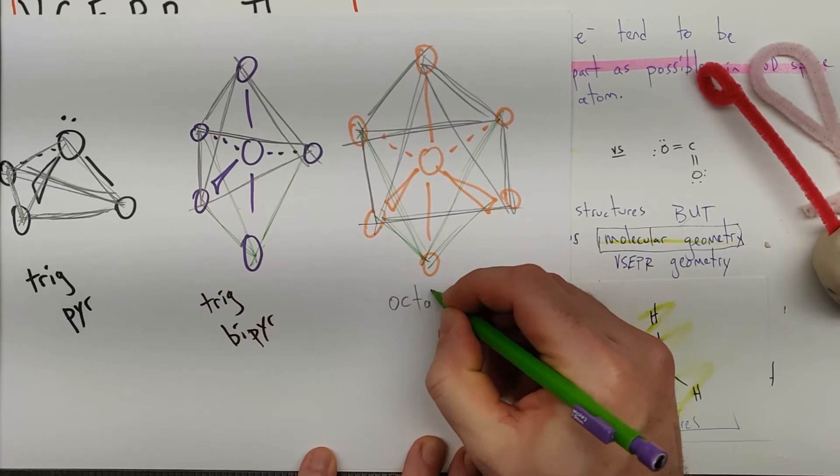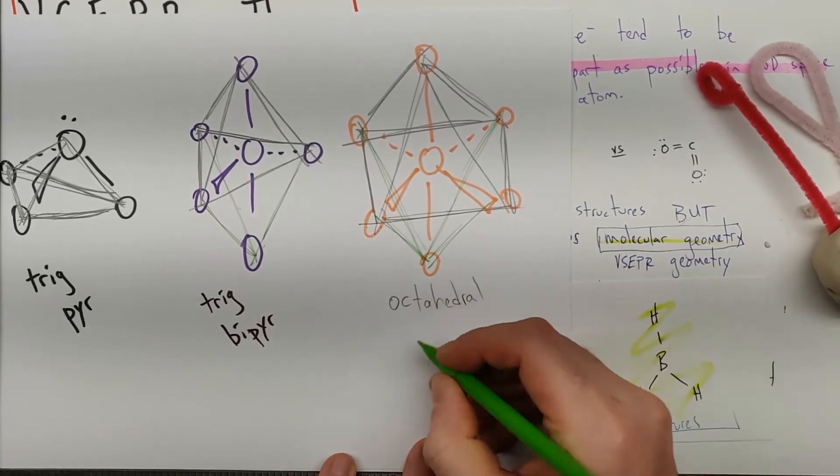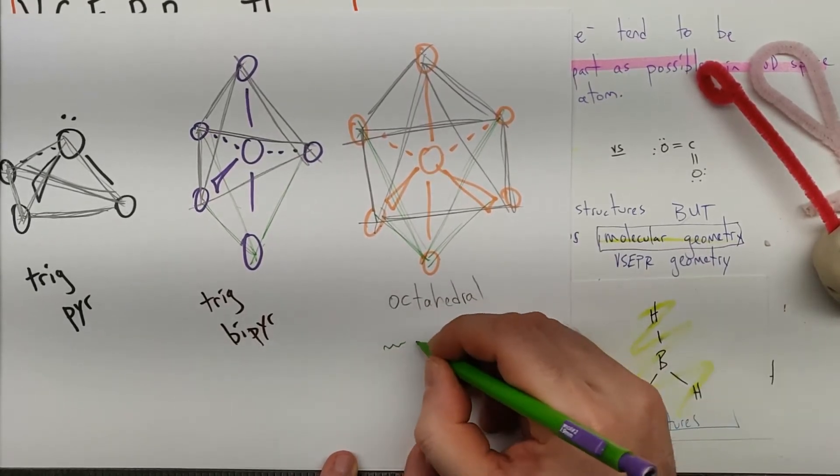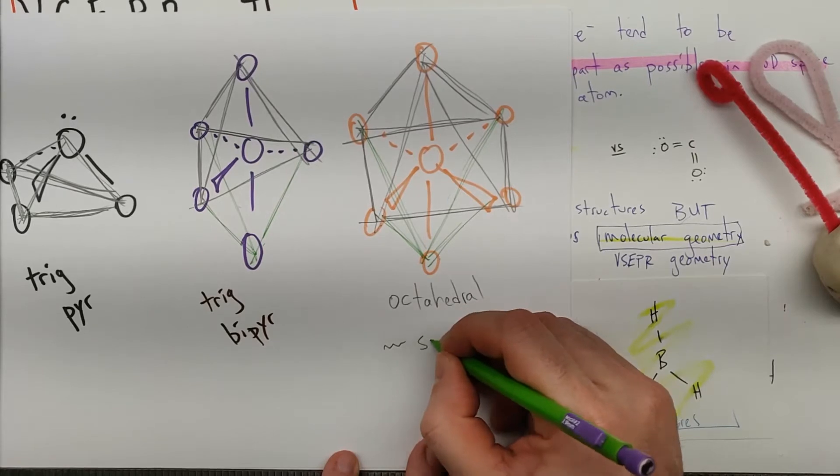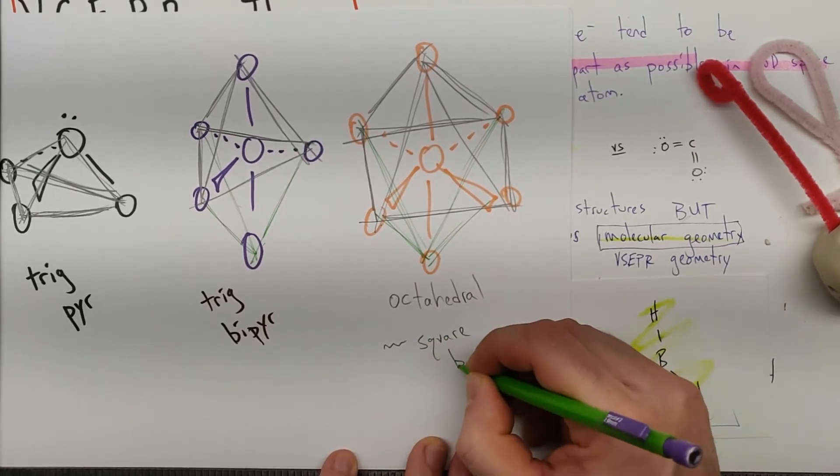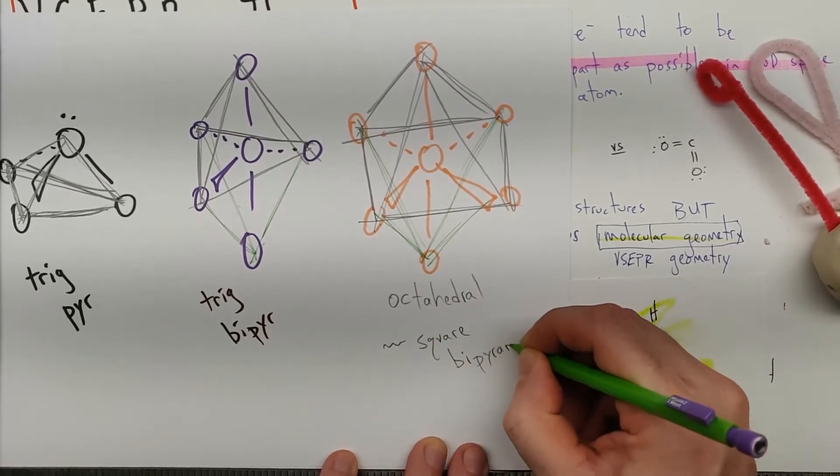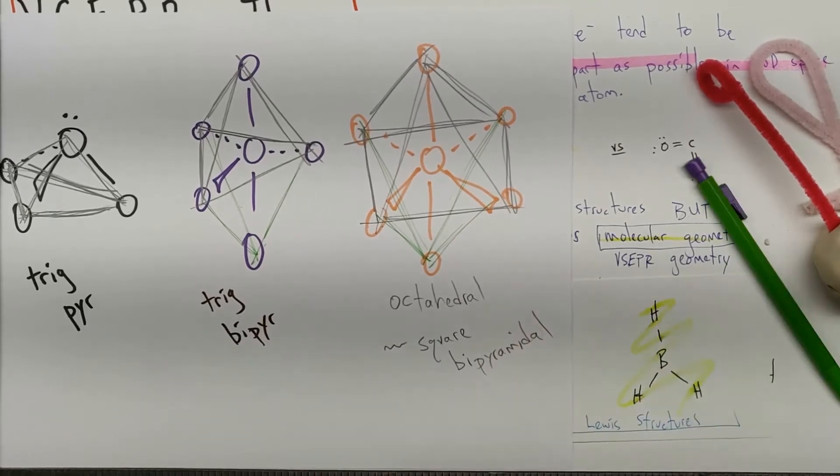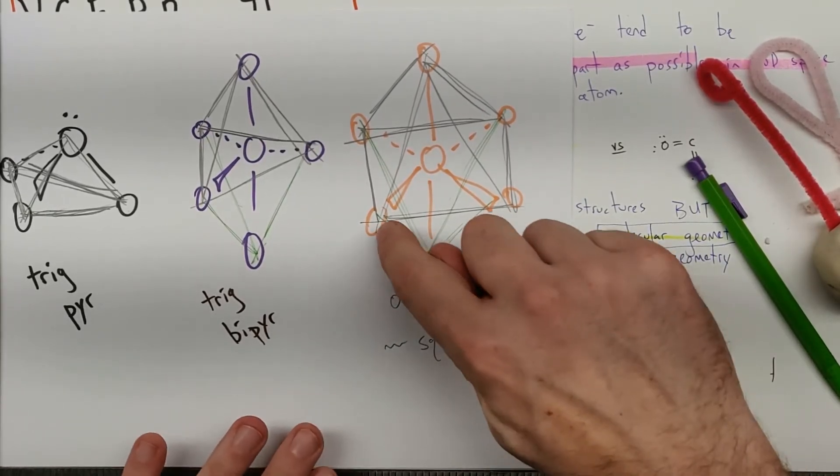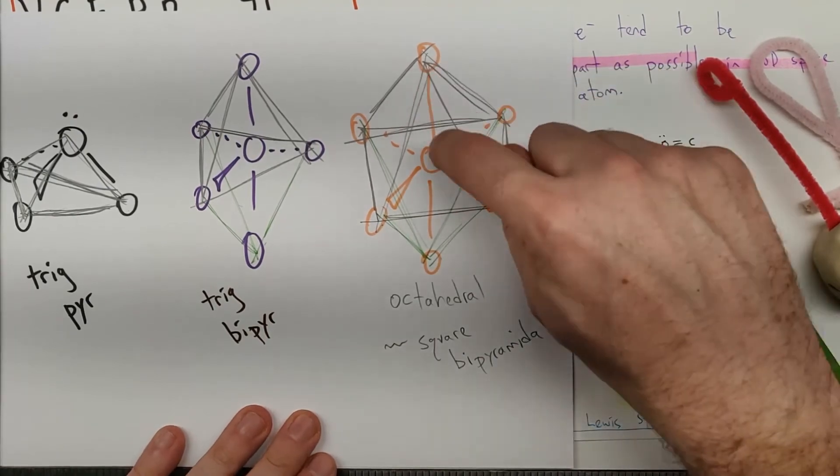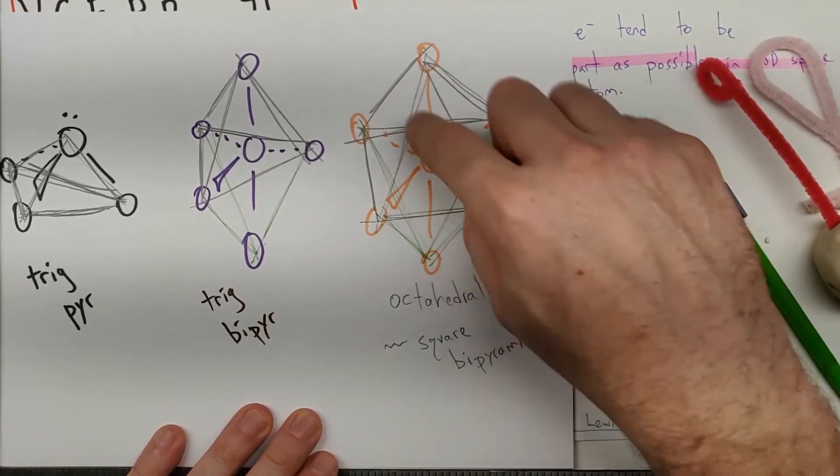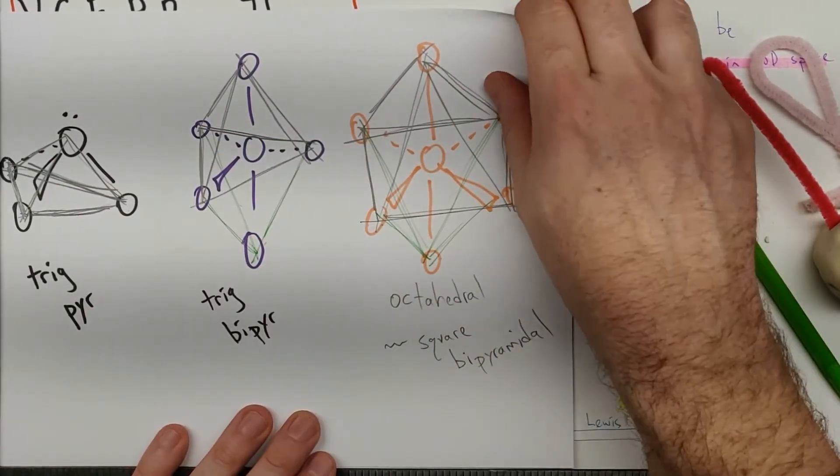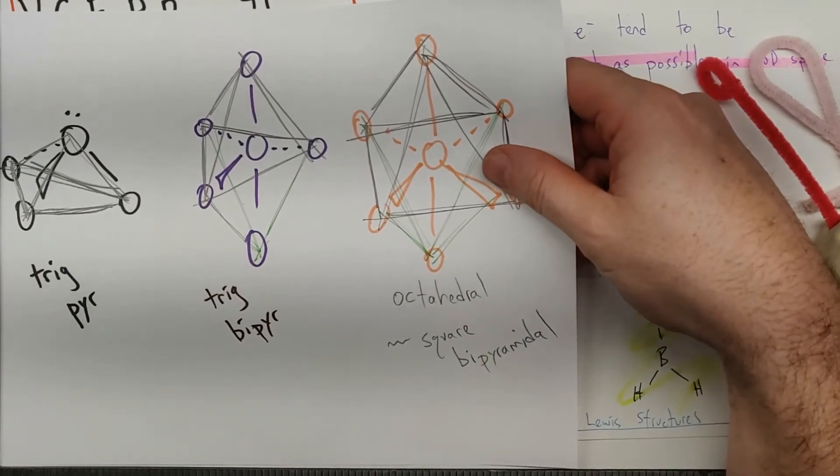So this is octahedral. And I'll just put a squiggly line, square bipyramidal. Anyway, I think it's kind of interesting to note how that naming scheme works. This atom is not attached to this atom. They're all attached to the bottom atom. But then how the three-dimensional surfaces work out is where that naming comes from.